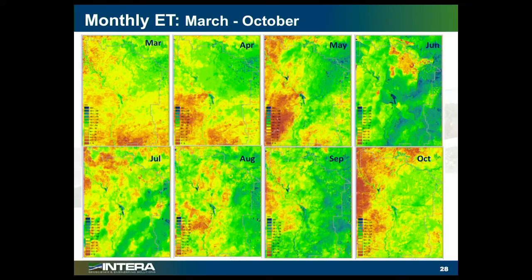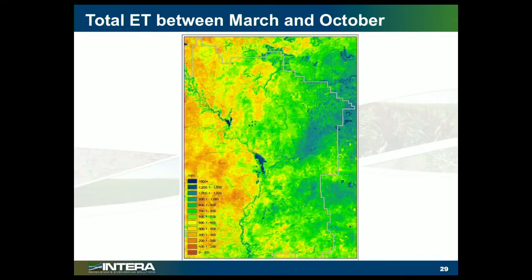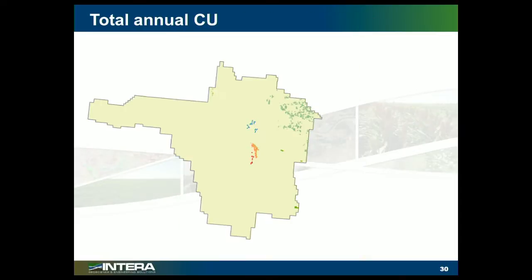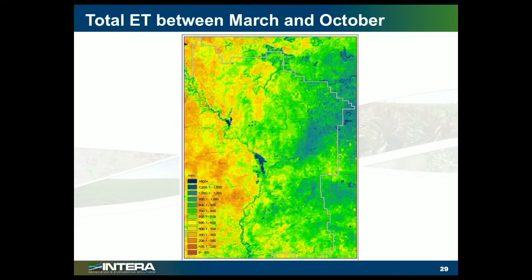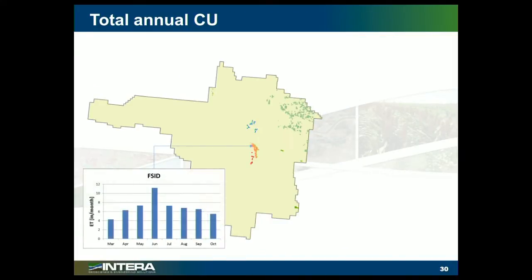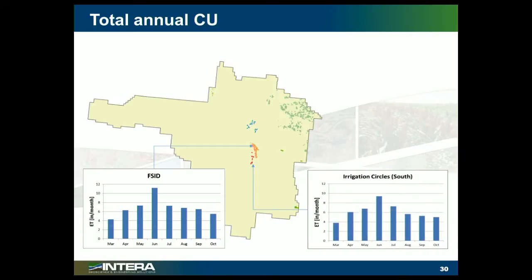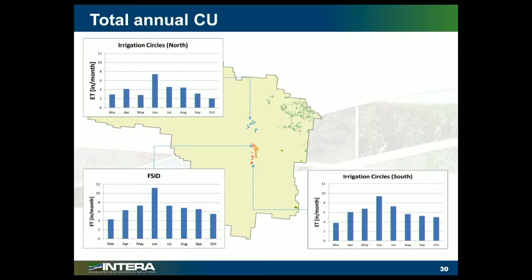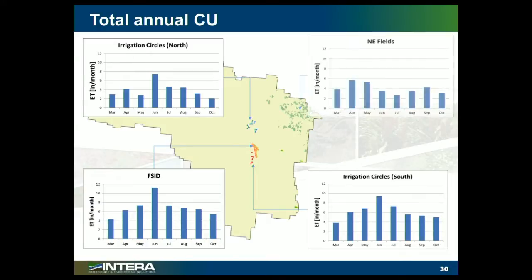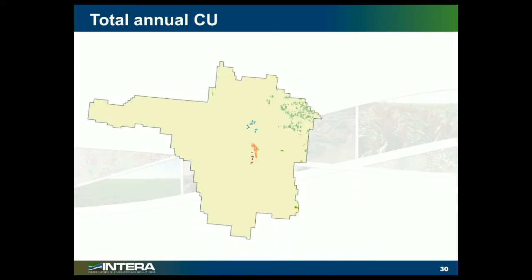For every month we have at each pixel in the image a value for how much water is being consumed. A lot of what you're seeing in the northeast corner of each one of these squares is native vegetation, so there's a lot of native ET going on. We can combine all that information together for the total growing season and calculate the ET or consumptive use for the areas we're interested in. There's a surface water irrigation district — the Fort Sumner Irrigation District — shown as a bar chart of ET in inches per month, and then some groundwater irrigated crop circles to the south and to the north. They all show the patterns you would expect, peaking in the middle of the summer.